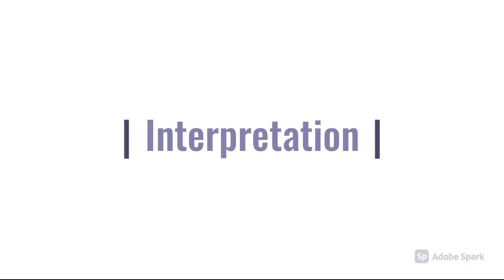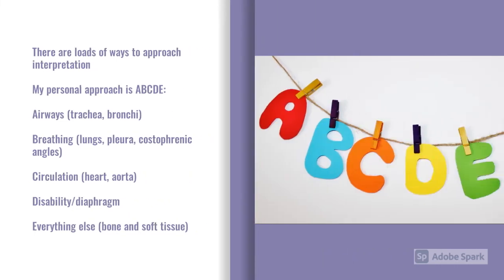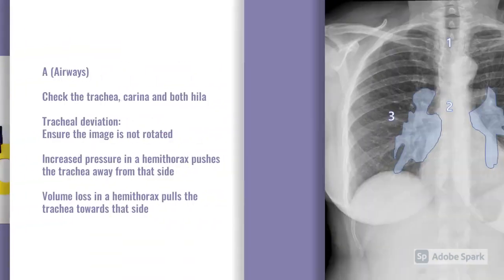Now let's look at how to go through chest x-ray interpretation. There are loads of different approaches — I'd recommend you find one that works for you. I use ABCDE, because I use ABCDE when I assess a patient and I use ABCDE when I'm looking at chest x-rays. So that's: airways, breathing, circulation, disability/diaphragm, and everything else — which is essentially the bones and soft tissue.